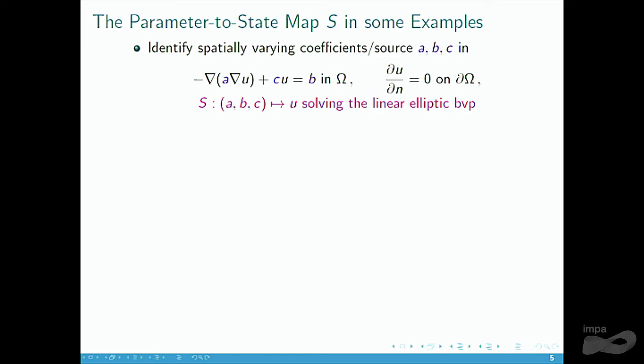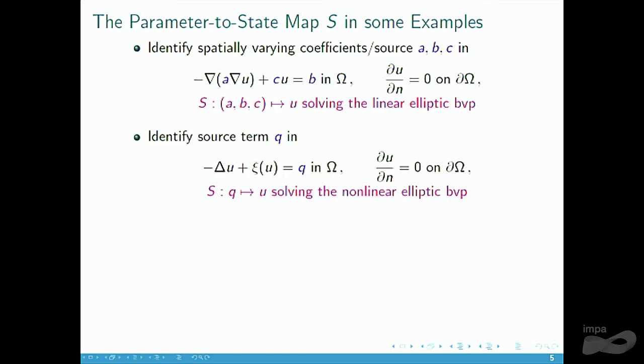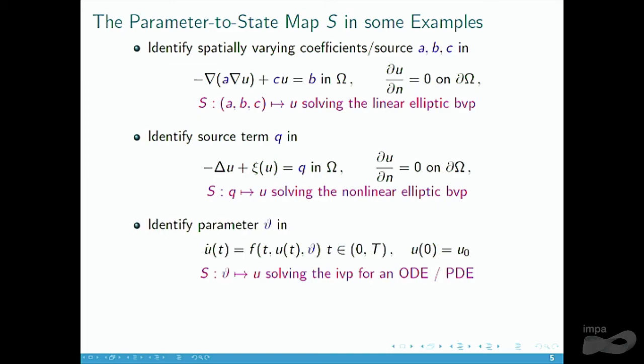To illustrate what this forward operator means in the examples: S maps one or all of the parameters to the solution of the elliptic boundary value problem, or maps the source on the right-hand side to the PDE solution, or maps the parameter theta to the solution of the abstract ODE. Generally, for some arbitrary forward model, the parameter-to-state map is implicitly defined by plugging in the corresponding U for Q.